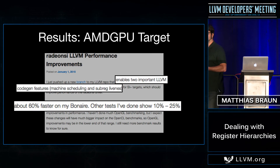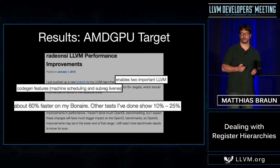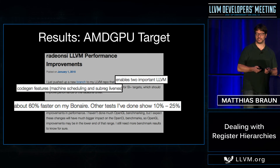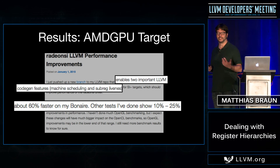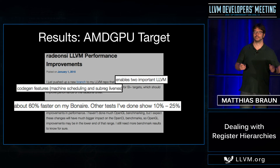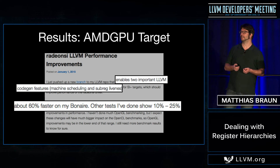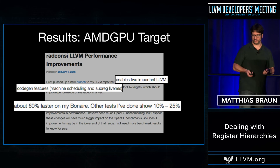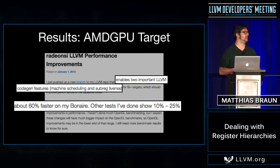Similar results I heard from people working on the AMD GPU target. When Tom Stellard enabled the new machine scheduler and sub-register liveness, he saw up to 60% improved benchmarks on his Bonaire GPU, and other cases improved 10 to 25%.